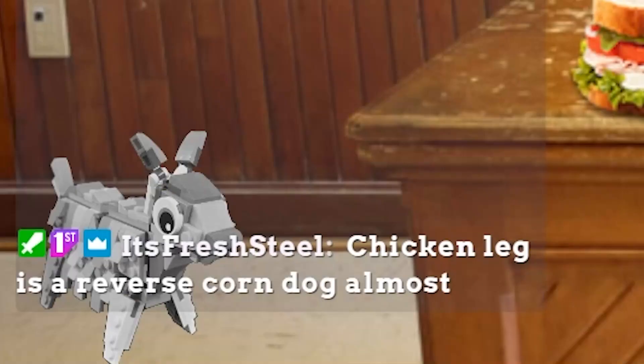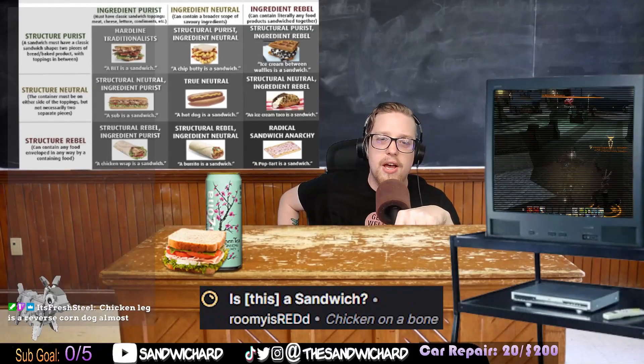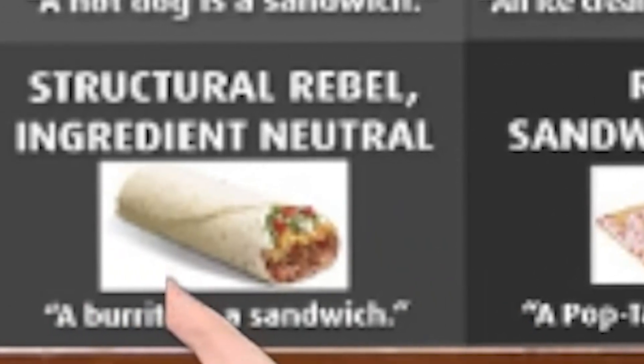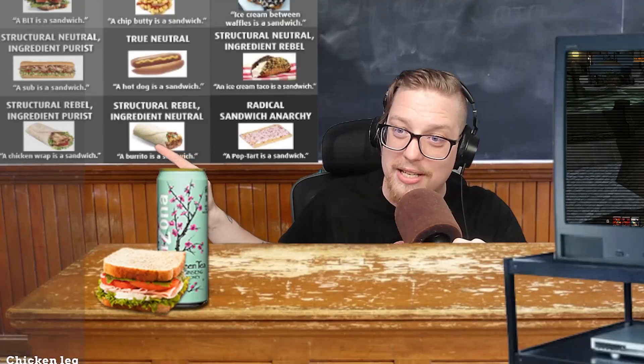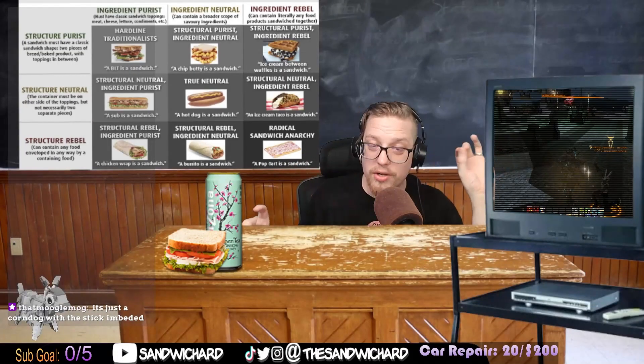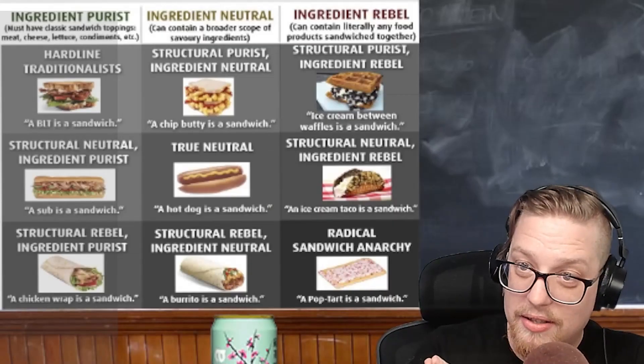I've reconsidered — a calzone and a Crunchwrap Supreme belong in structurally rebellious but ingredient pure. The corn dog has an outside of breading, inside of corn dog, and then a further inside of stick. So the stick and the breading are the bread — the inside and outside — and the hot dog itself is the middle. So the bread in that case is the stick and the breading; that is what is sandwiching the hot dog. That would still technically be a sandwich. The ingredients are incorrect and the structure is also incorrect, so I guess it's still radical sandwich anarchy.